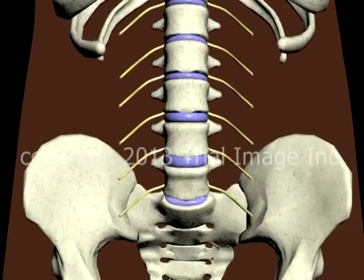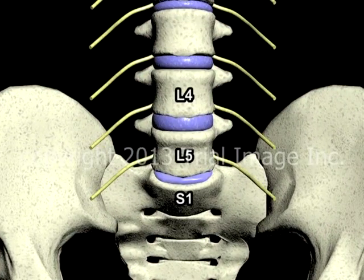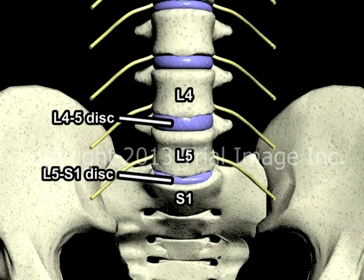Taking a look first at the anatomy, we see the 4th and 5th lumbar vertebra, or L4 and L5 as they're known for short, and the 1st sacral vertebra, or S1. And then the L4-5 disc sitting between the 4th and 5th lumbar vertebra, and the L5-S1 disc sitting between the 5th lumbar and 1st sacral vertebra.